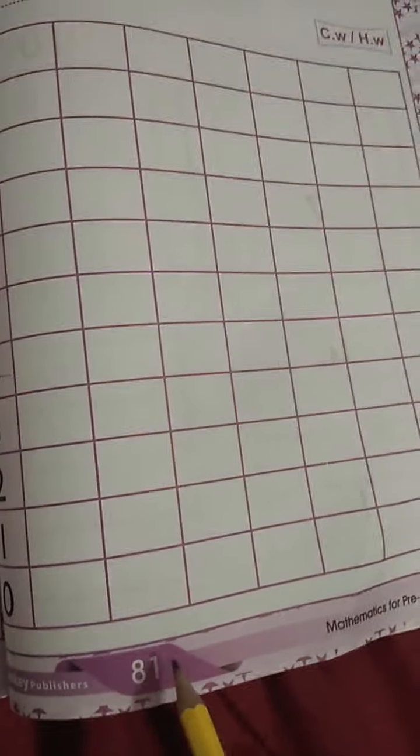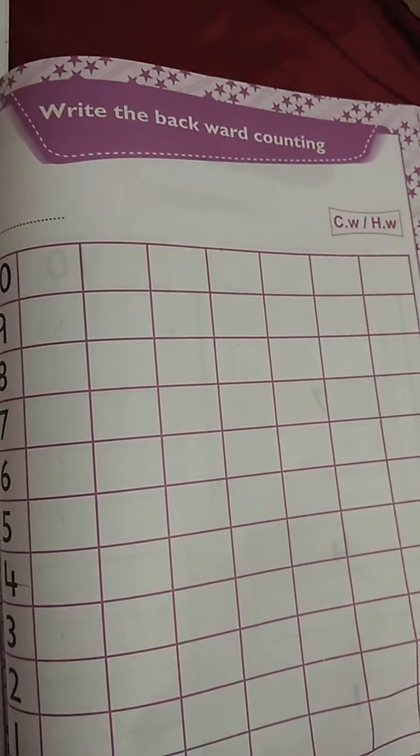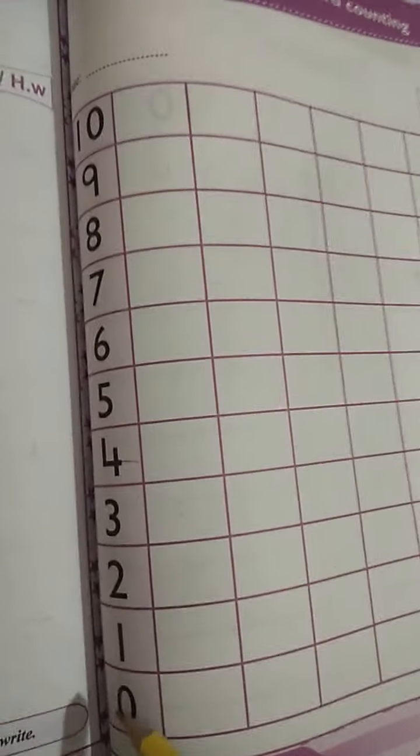Come to the next page. This is page number 81, and here they are saying write backward counting. So they have done one line for you.